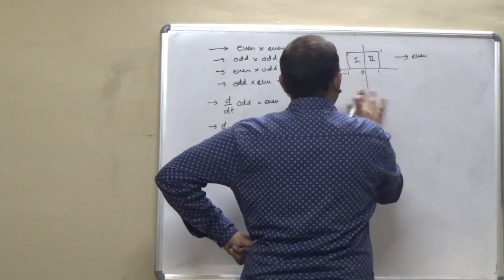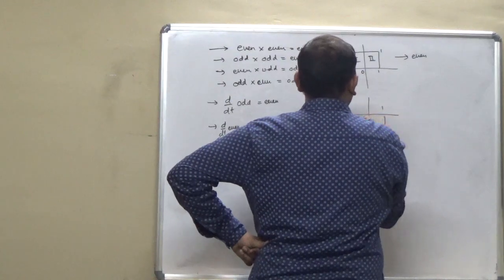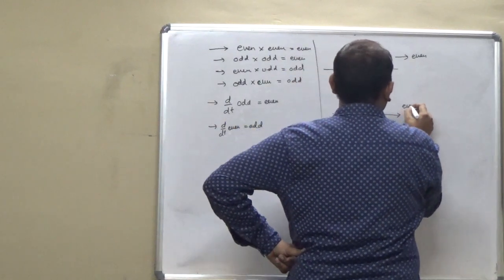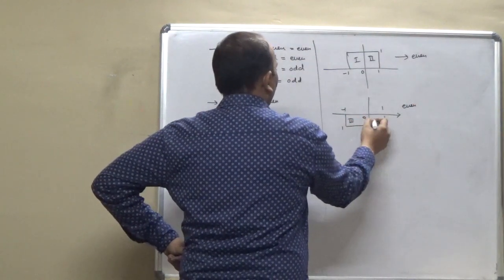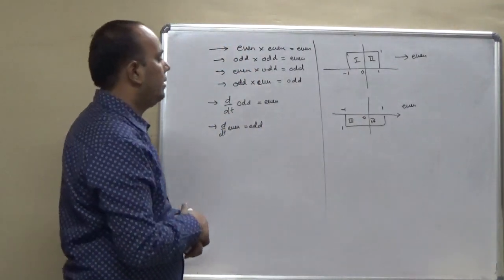And also, if function lies at the minus 1, 1, 0, 1, then it is also even. That is the third coordinate and fourth coordinate. Function lies at the third and fourth coordinate, then that will be like that.